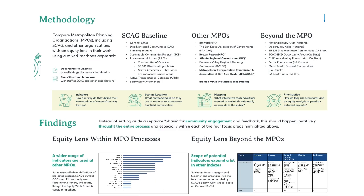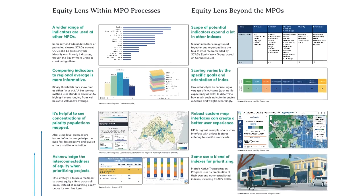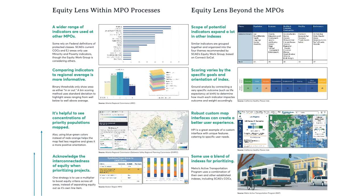Moving down, we see the start of the findings section. I split it into two different categories to make it easier to compare. The left column highlights findings from the MPOs, while the right column expands to include other organizations and programs. Here are just a few of the findings: a wider range of indicators are used at other MPOs, comparing indicators to regional averages is more informative, it's helpful to see concentrations of priority populations mapped, and it's important to acknowledge the interconnectedness of equity when prioritizing projects.